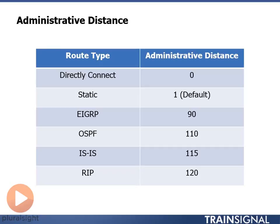The administrative distance tells the router which route is the best route to add to the routing table. If the route is directly connected, that route has an administrative distance of 0. Zero is the best administrative distance. Static routes have a default administrative distance of 1, which means they are the next best route.